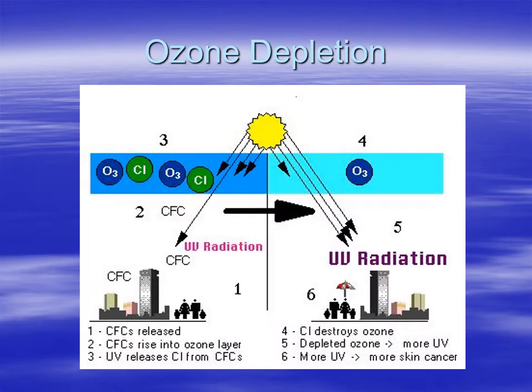The problem is that there are certain chemicals that break down the ozone in the stratosphere. And most notorious of these ozone-depleting chemicals was a class called chlorofluorocarbons, or CFCs for short, because saying chlorofluorocarbons is kind of hard.